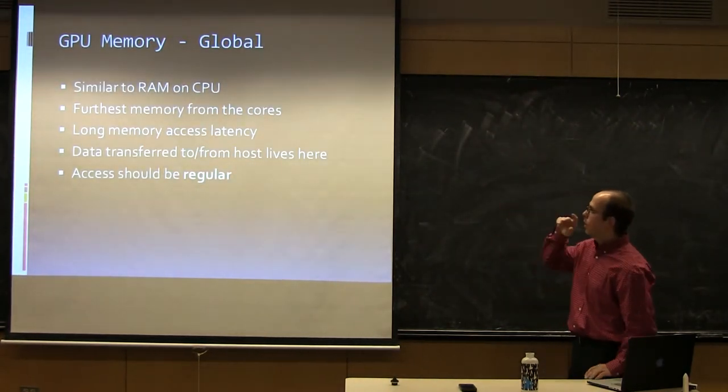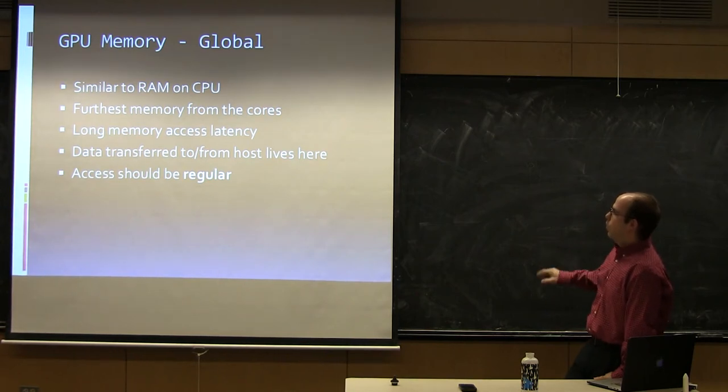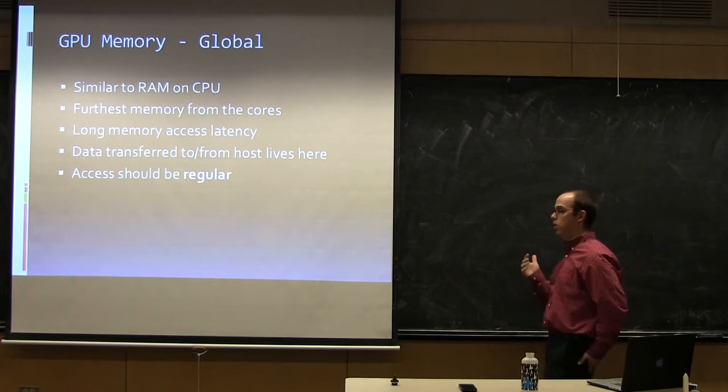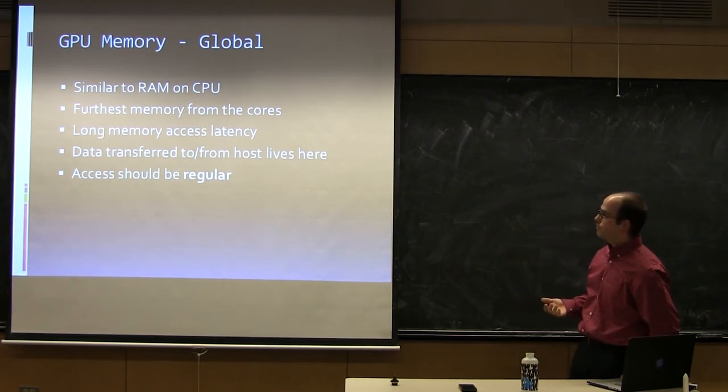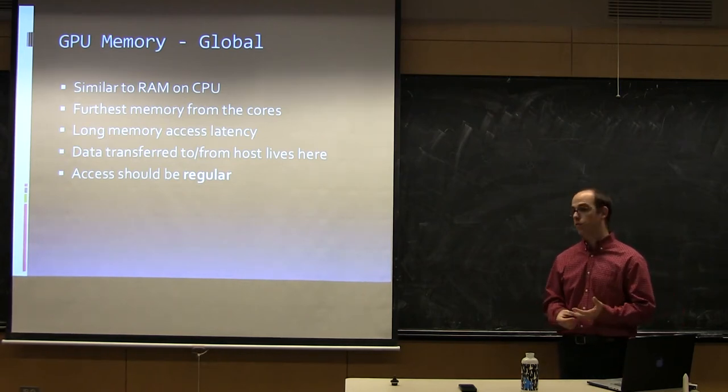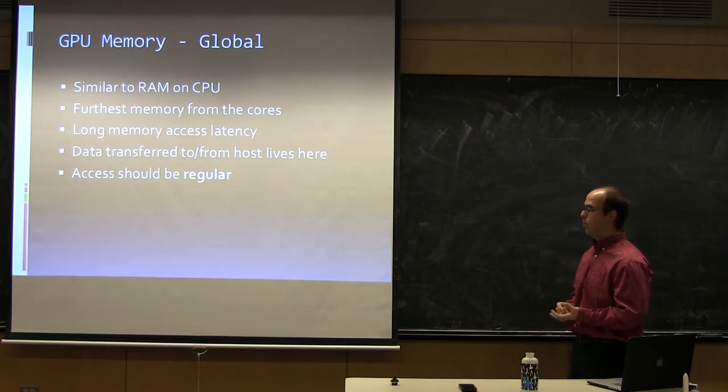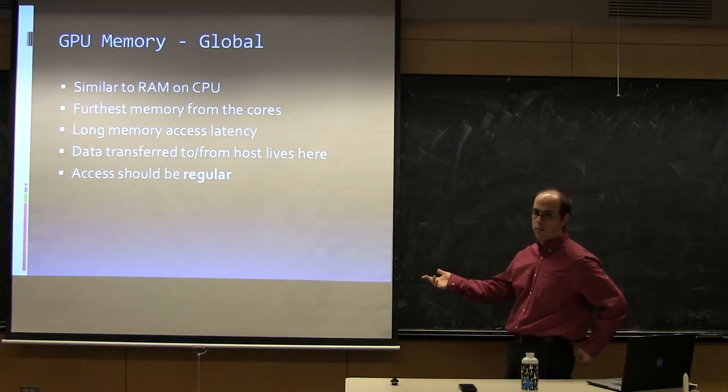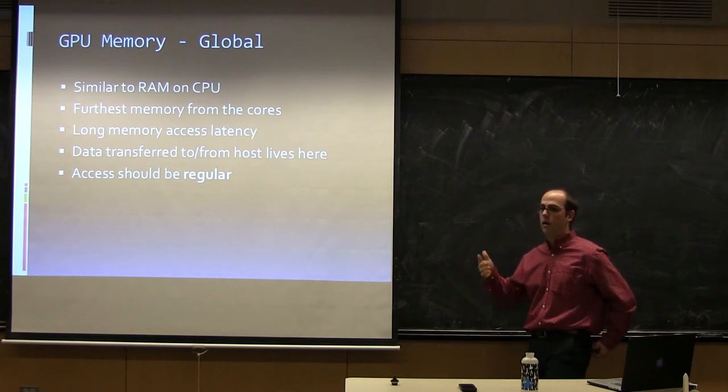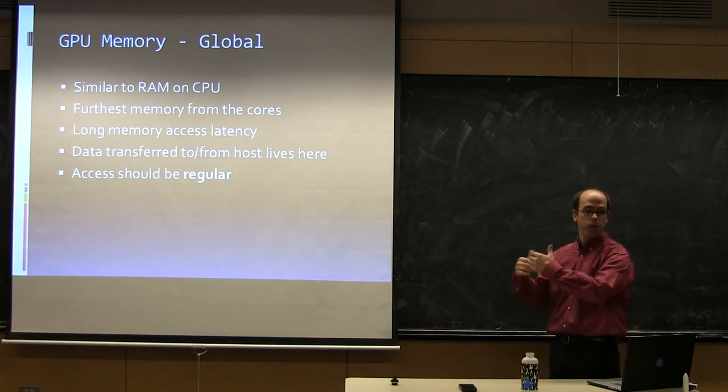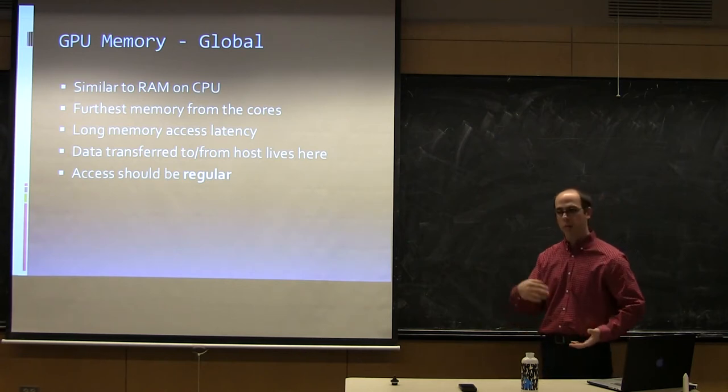I'm going to talk a little bit more about each one of these. So we went over global. It's basically the same as RAM. It's far away from the cores. It takes a long time to get data there. And one other restriction, when you access it, you have to access it in a very special way to get the maximum performance. Also, to get data to the GPU, when you do the copies from the CPU from the host, that's where all the memory ends up. And if you want to copy results back, it has to be already loaded in global memory. So if you do a bunch of stuff in your local caches, you still ultimately have to dump it to global memory before you copy it back to the CPU.